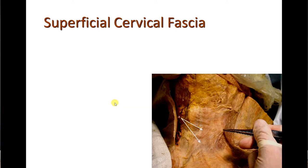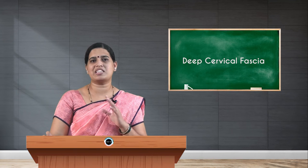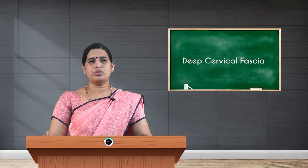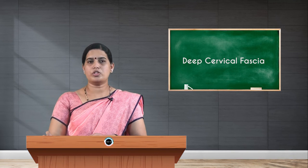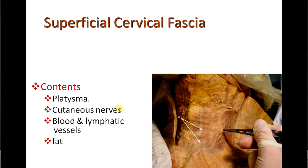In the superficial fascia of the neck — the superficial cervical fascia — you find cutaneous vessels, nerves, and fat. You also find one subcutaneous muscle called the platysma muscle. So the superficial cervical layer contains the platysma muscle along with cutaneous nerves, vessels, and fat.